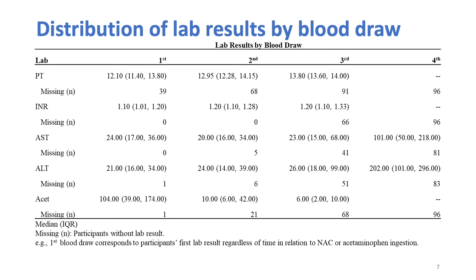This table represents lab results by blood draw, numbered corresponding to patients' chronological lab draws, regardless of time in relation to NAC administration or acetaminophen ingestion. Missing values suggest that repeat labs were either not drawn or not recorded. For example, zero participants were missing a first or second INR value, but 66 were missing a third.